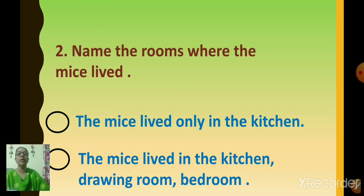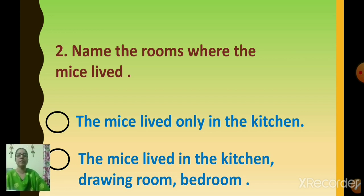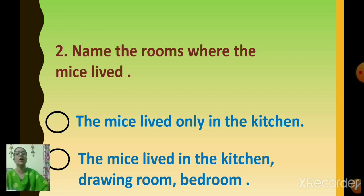Number two: Name the rooms where the mice lived. First option — the mice lived only in the kitchen. Second option — the mice lived in the kitchen, drawing room, and bedroom. Did they live only in the kitchen? No. They lived in the kitchen, drawing room, and bedroom. The correct answer is the second one. Click on the second option.